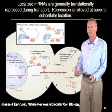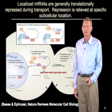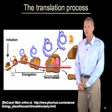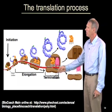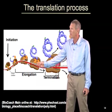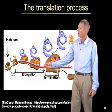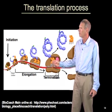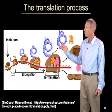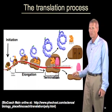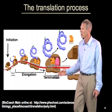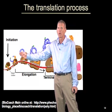Once an mRNA reaches its proper place, it needs to enter translation. Translation is a complex process with three different phases. It initiates with the initiation phase, where ribosomes load on the message, followed by elongation, where the polypeptide chain is produced as the ribosome moves along the mRNA translating each codon, followed by a termination phase, where the ribosome recognizes the stop codon, releases the newly produced protein, and the ribosome subunits disassemble. Most of the control and regulation of translation occurs at the initiation phase, where ribosomes load onto the message.